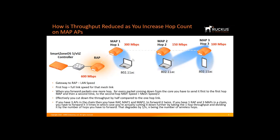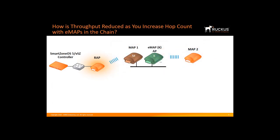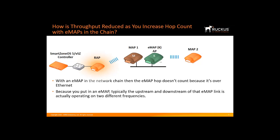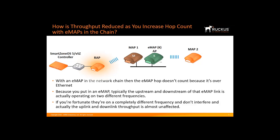How is throughput affected when eMAPs are in the chain? If you have an eMAP in the network mesh chain, the eMAP hop doesn't count because it's over Ethernet, which is as fast as it gets — so you can take that hop count out of the equation. Furthermore, the upstream and downstream of the eMAP link typically operates on two different frequencies. If those frequencies don't interfere, the uplink and downlink throughput is almost unaffected — there is a small overhead but for practical purposes you can ignore it.